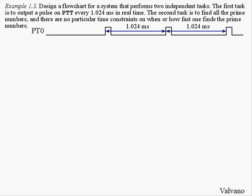The system has two independent functions. The first function will be to find and record prime numbers, and there is no particular time constraint on this first function. However, the second function is real-time. Its purpose is to create a waveform such that every one millisecond, a pulse is created on the output which goes low, high, and low again. This pulse is to be repeated every 1.024 milliseconds.